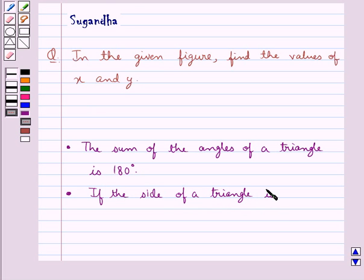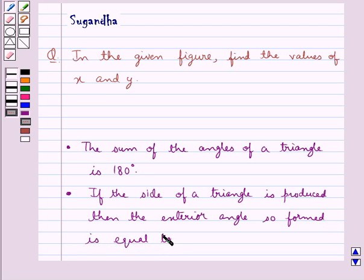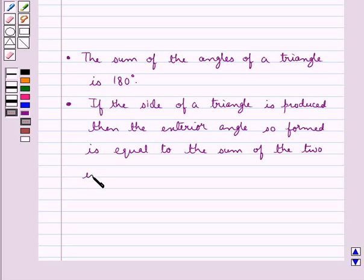And also, if the side of a triangle is produced, then the exterior angle so formed is equal to the sum of the two interior opposite angles.